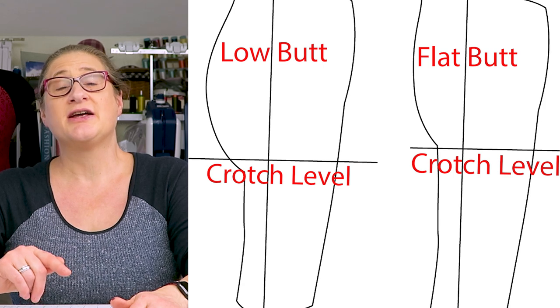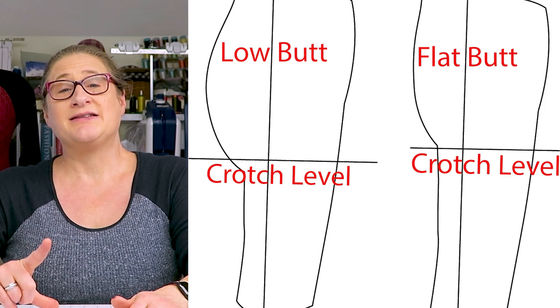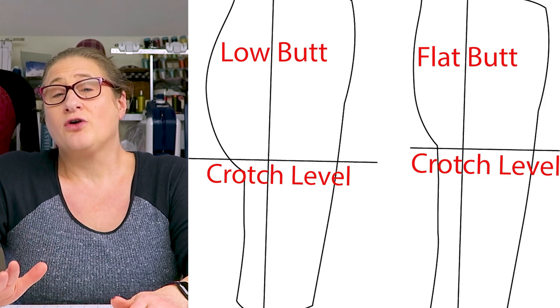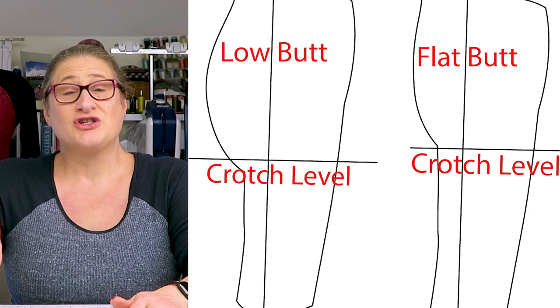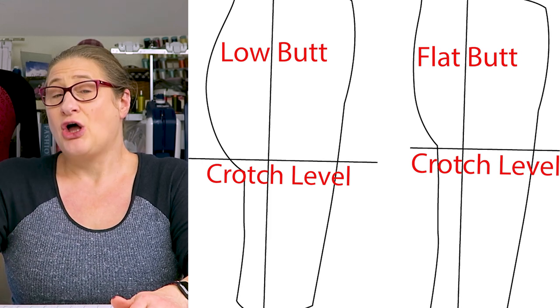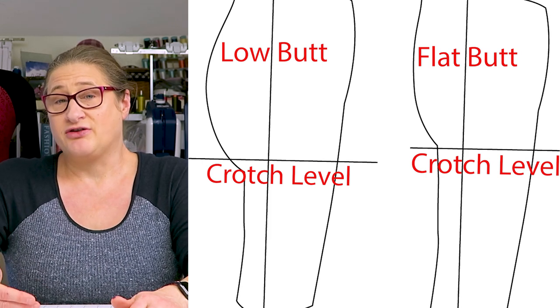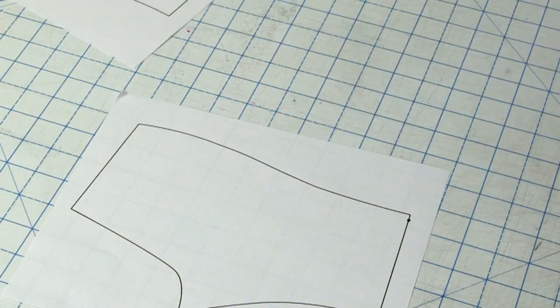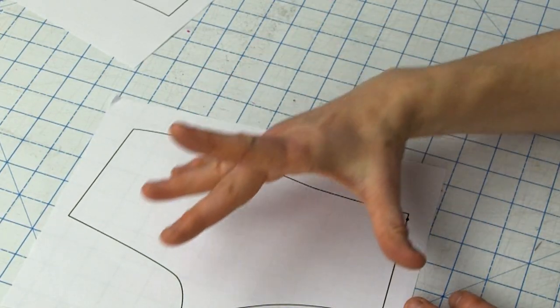Now let's look at a low butt, and I'm going to put them side by side here so you can see the differences. A low butt means that the curve of your butt actually is lower than crotch level. Now let me describe to you what crotch level means to me.